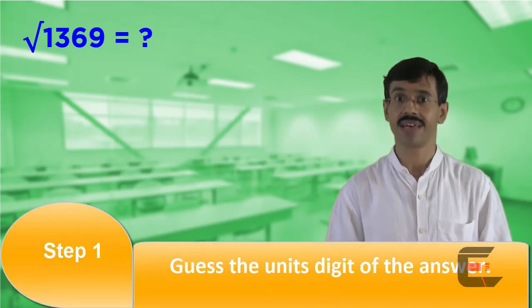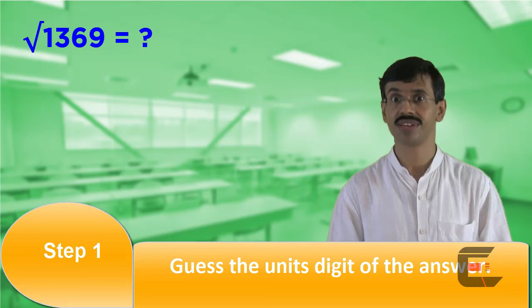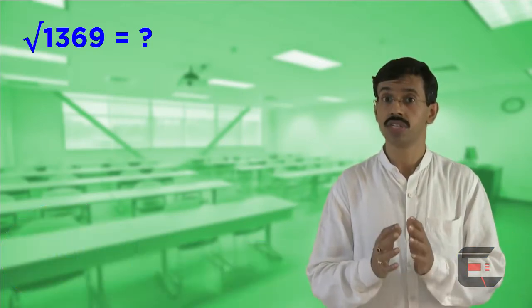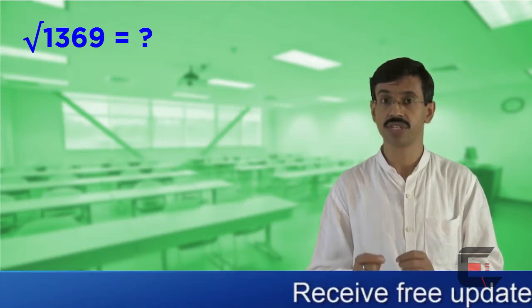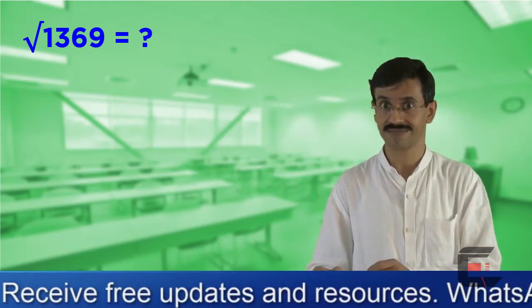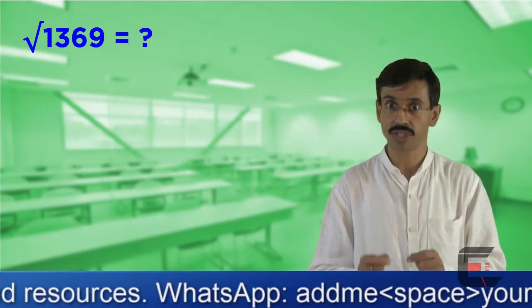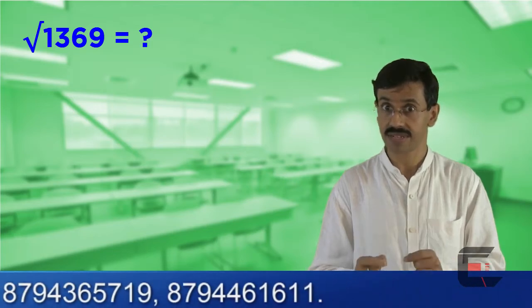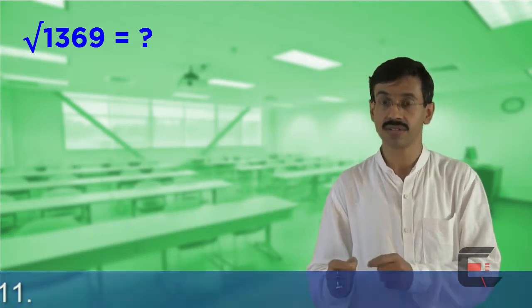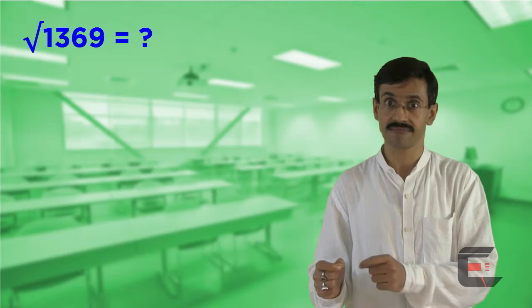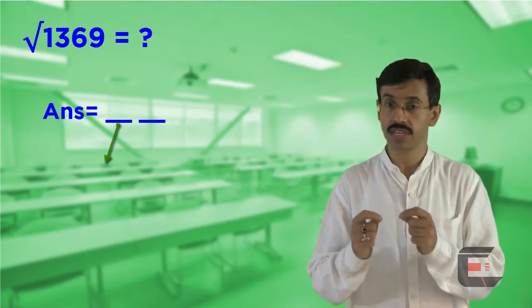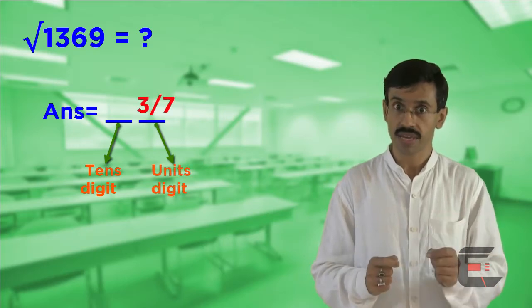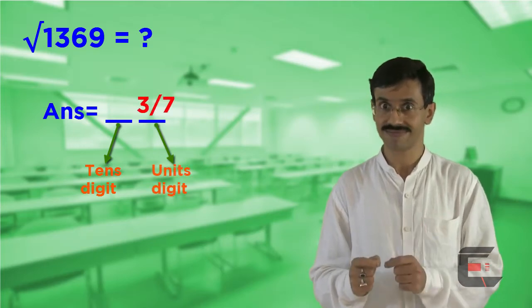Step 1. Guess the units digit of the answer. When we square a number whose units digit is 3, the units digit of the answer is 9. Similarly, we also know that when we square a number whose units digit is 7, the units digit of the answer is again 9. Therefore, in our question, the units digit of the answer will either be 3 or 7.